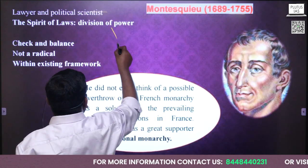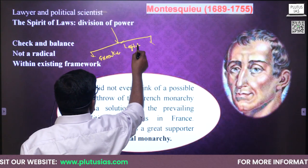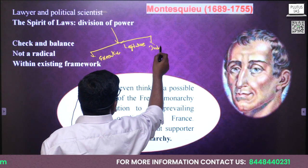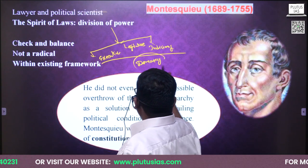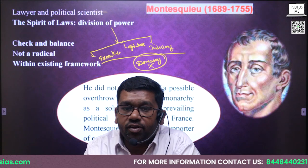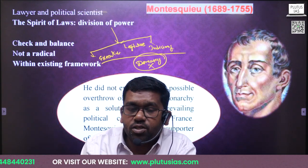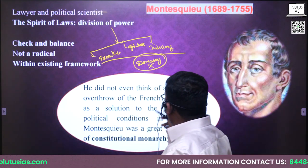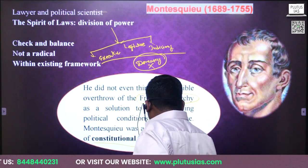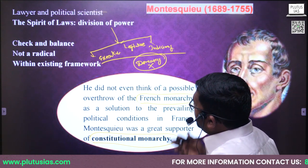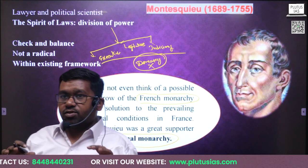Montesquieu wrote 'The Spirit of the Laws' and discussed the division of power into three branches: executive, legislative, and judiciary. However, he did not support democracy — he believed there should be a king who divides power among three departments, and the king should appoint and punish corrupt officials. He was a great supporter of constitutional monarchy, not a republican state. He wanted reforms within the existing society.